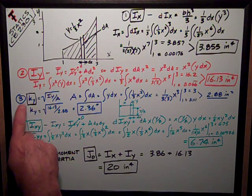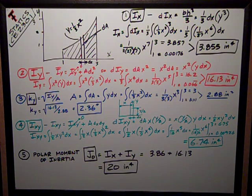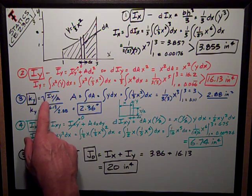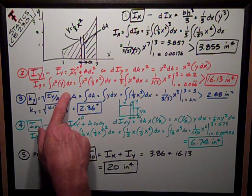Number three, I want my radius of gyration about the y-axis, that's just equal to the square root of Iy divided by the area. That means I have to compute the area.